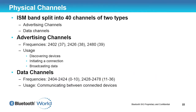Next we're going to talk about low energy. In terms of the physical channel, with basic rate we split the channel up into 79 different channels. In low energy, because the signal is slightly wider, we split it into 40 channels.